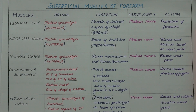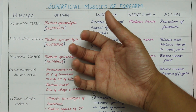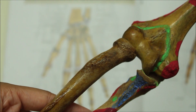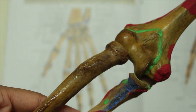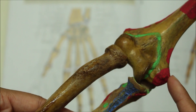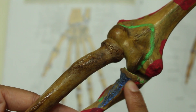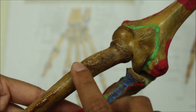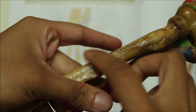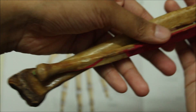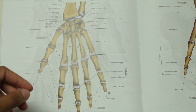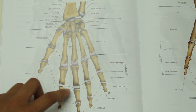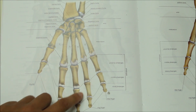The action of the flexor digitorum superficialis is that it flexes the middle phalanx of the fingers. As a whole, it originates from a humero-ulnar head — from the medial epicondyle of the humerus and the medial border of the coronoid process of the ulna — and a radial head from the anterior oblique line. It inserts by two slips of four tendons into the sides of the middle phalanx of the second to fifth digits.